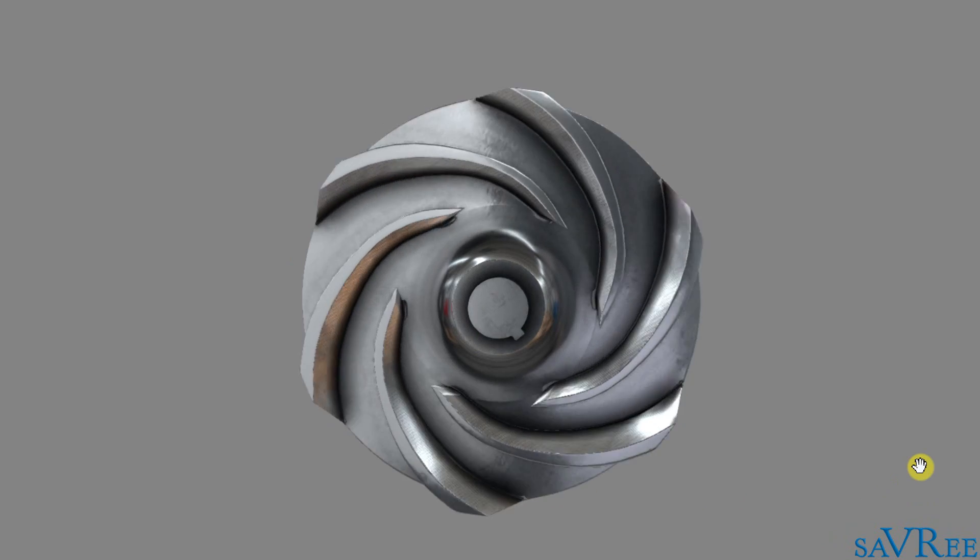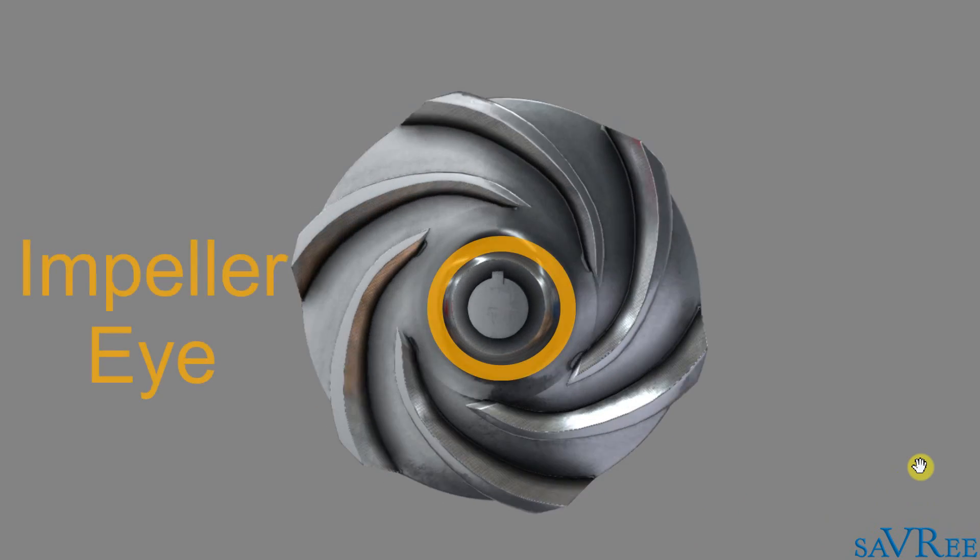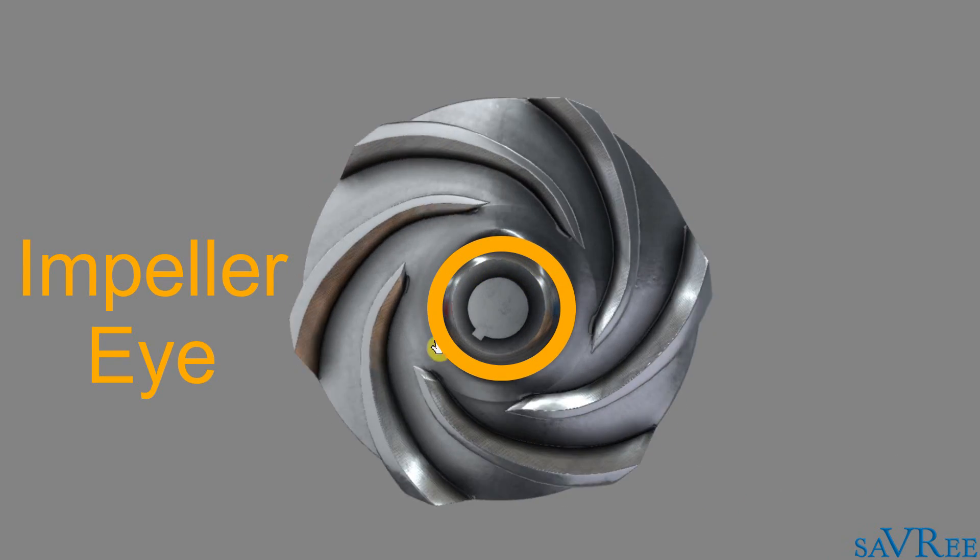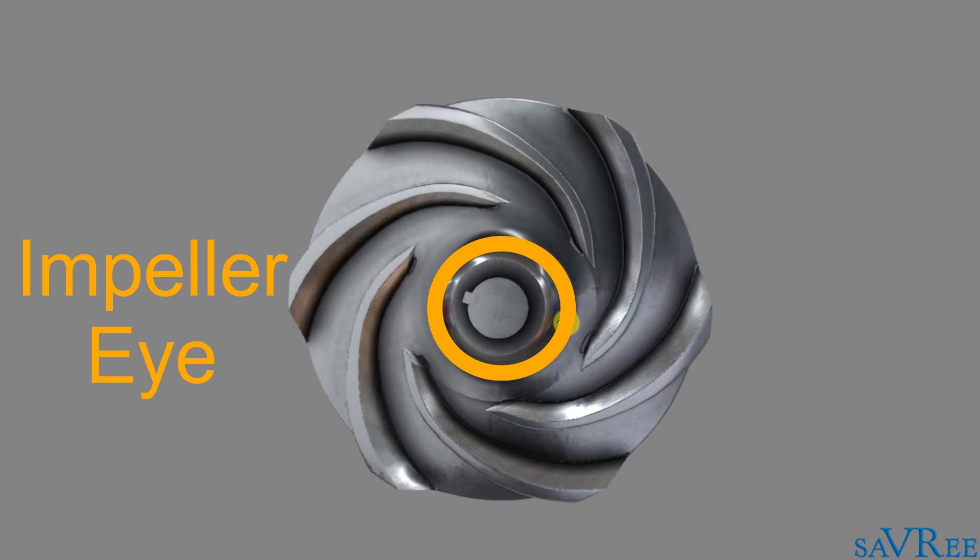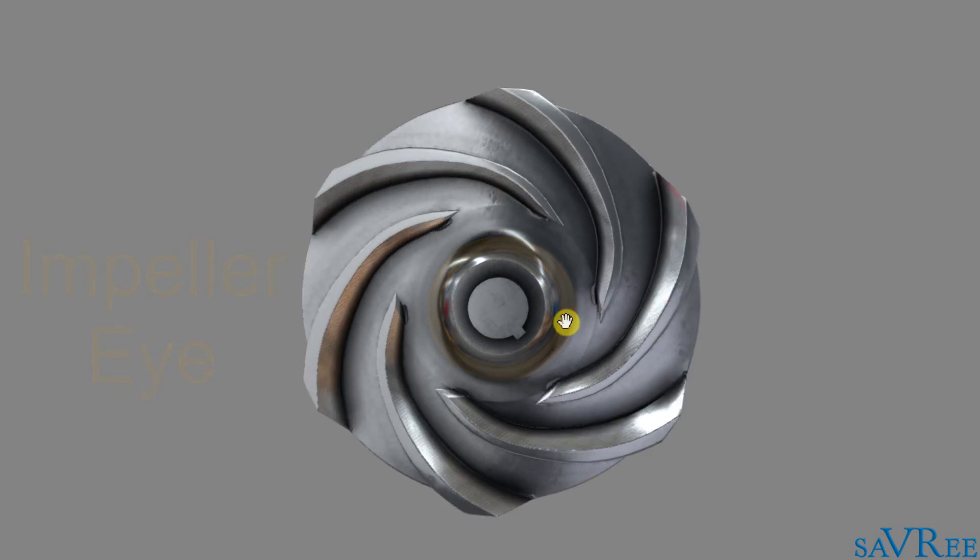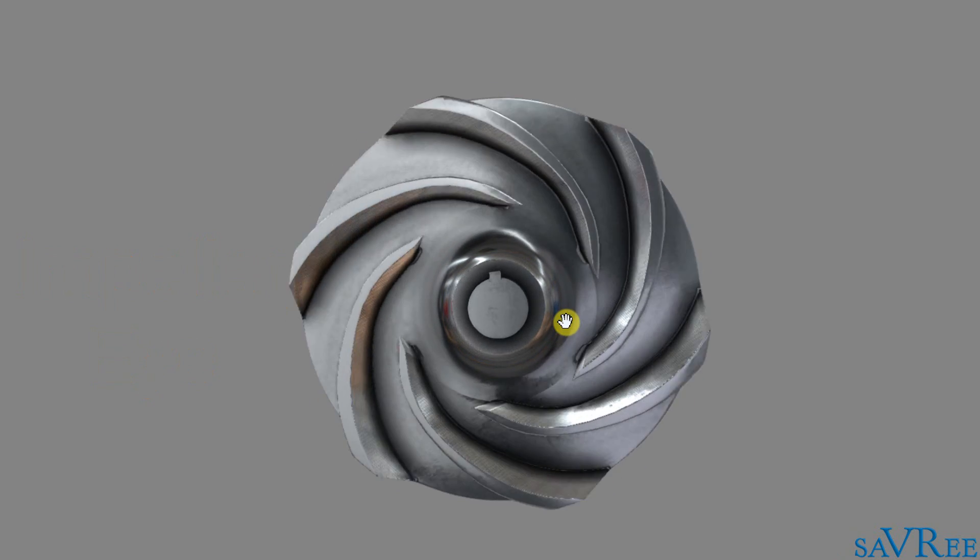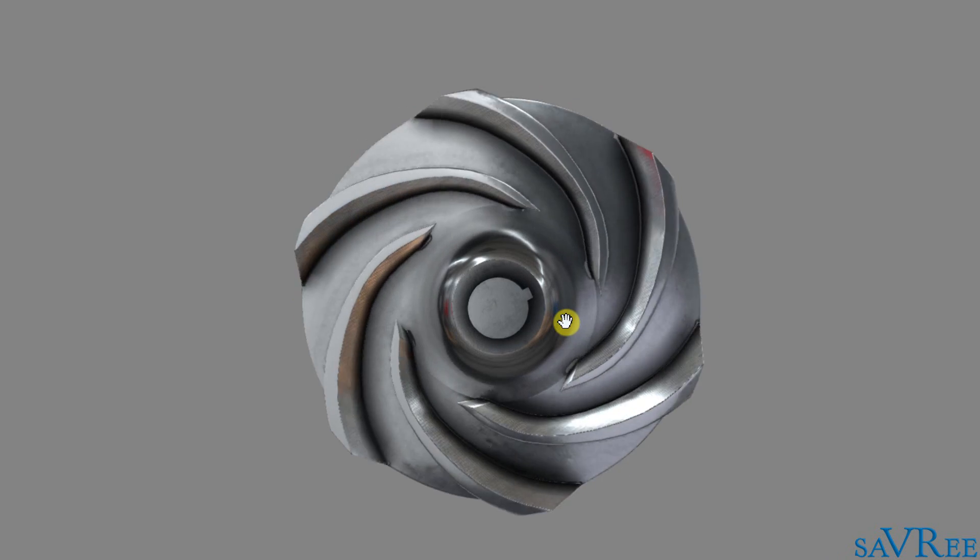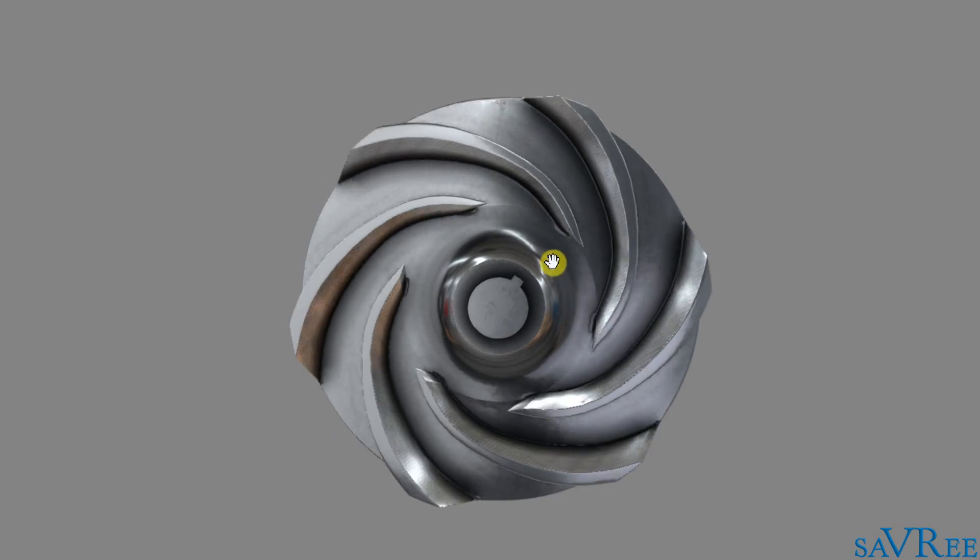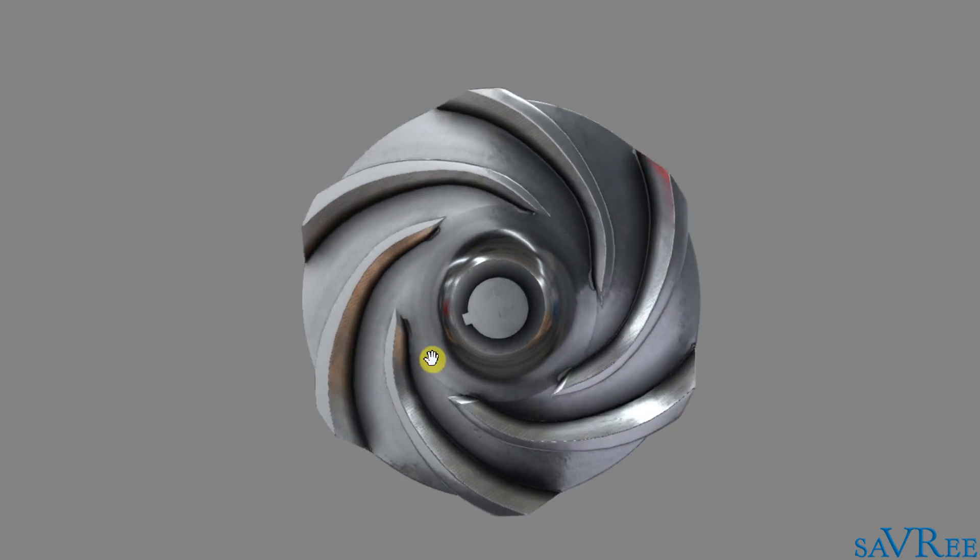The suction side of the impeller is this middle area here. That's what we call the eye of the impeller. And as we draw the liquid in, we're going to create a negative pressure at the eye of the impeller. And then we're going to throw the liquid outwards radially, away from the center of the impeller, towards the outer periphery of the impeller.